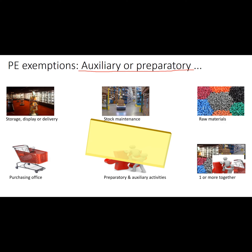BEPS Action 7 has worked on narrowing the scope of the exemptions from PEs by: first, explaining that the preparatory or auxiliary test applies to all exemptions and not just the last two; and second, by preventing the artificial splitting of activities across multiple entities, where each of those activities in themselves may be preparatory or auxiliary, but in combination, they exceed that threshold.